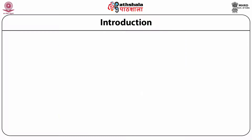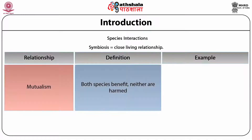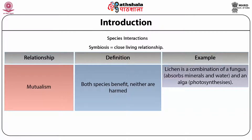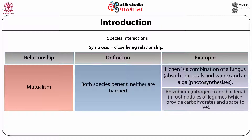This table represents species interaction and symbiosis — close living relationships. Mutualism: both species benefit, neither are harmed. Lichen is a combination of a fungus that absorbs minerals and water, and an alga that photosynthesizes. Rhizobium: nitrogen-fixing bacteria in root nodules of legumes which provide carbohydrates and space to live.